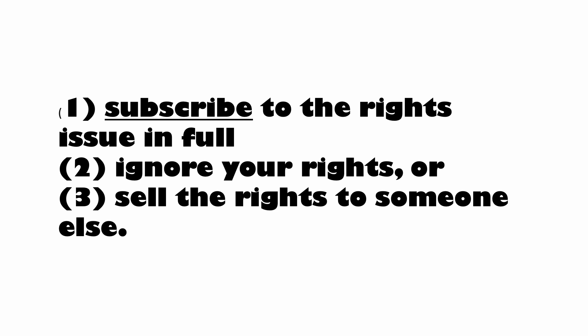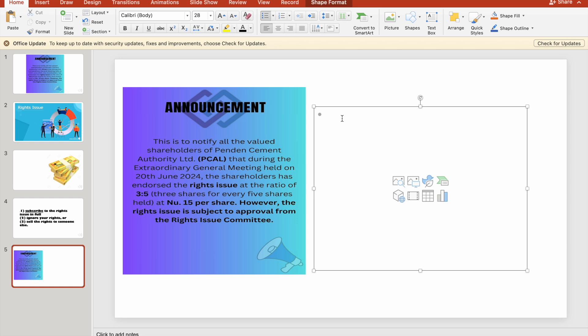Coming to option one — if you want to subscribe to the rights issue in full, let's see how we can calculate the number of right issue shares you will receive and have to purchase. The rights issue which PenCem Authority Limited is offering is three shares for every five shares held. Suppose you have 1,000 shares of PenCem Authority Limited — the rights issue is three shares for every five shares.